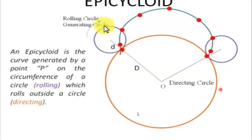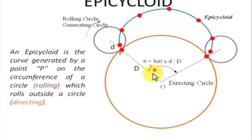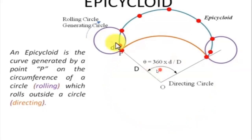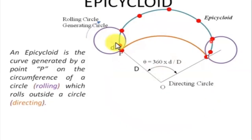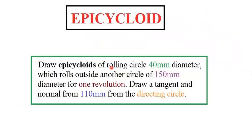For calculating the angle, we use the formula: theta = 360 × (smaller diameter / greater diameter). We will get the angle and use it in the problem. The final curve will look like this. While solving the problem we will have a clear understanding, so let's go into the problem.